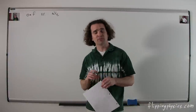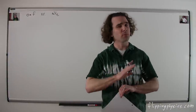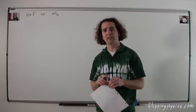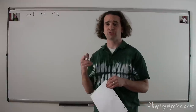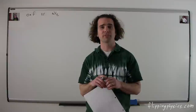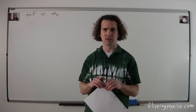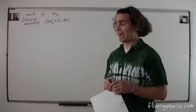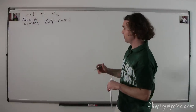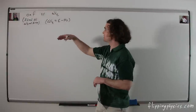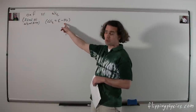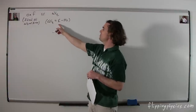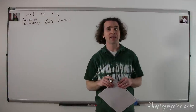EMF, or electromotive force, versus terminal voltage. Electromotive force is a misnomer — it sounds like a force, but it is not. The EMF is the ideal electric potential difference across a battery, whereas the terminal voltage ΔV_T is the actual potential difference you get from a battery. The terminal voltage equals the EMF minus the current times the internal resistance r. The only way to get the terminal voltage equal to the EMF is if the current equals zero.